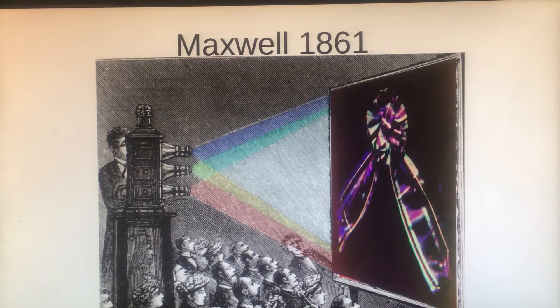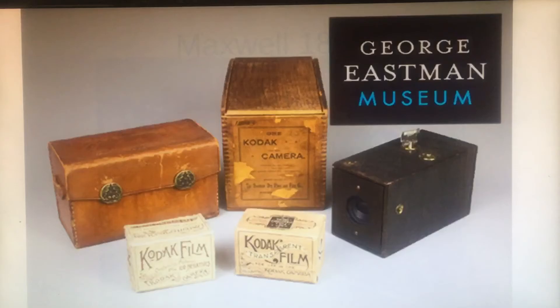The first color photograph was done by Maxwell in 1861. That's the first color photograph where the color was permanent — they were able to fix the color. But it was so expensive it wasn't commonly used until the 1900s.